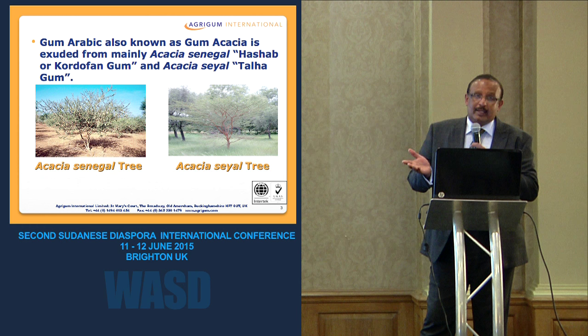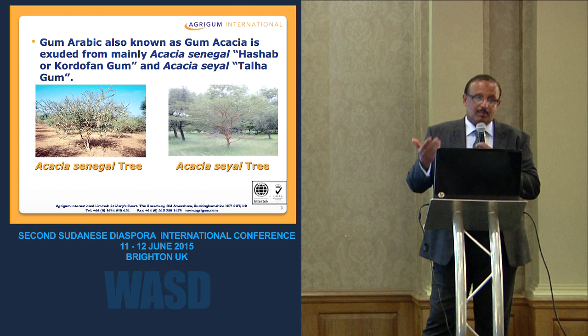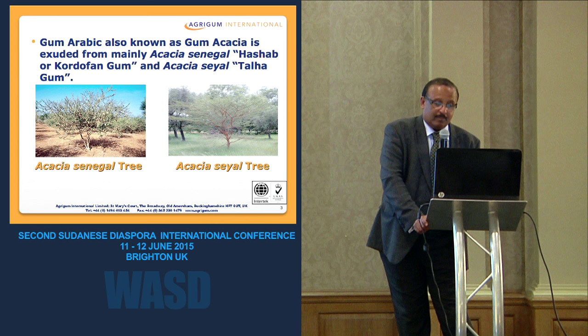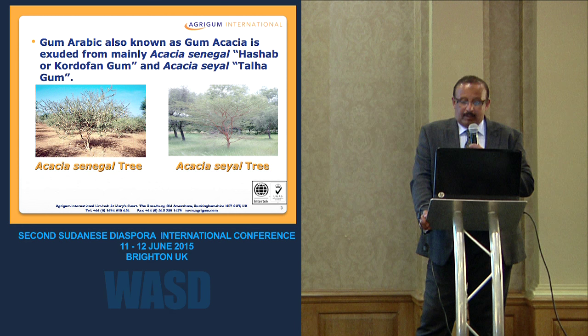Gum Arabic and gum Acacia are the same product — some people use gum Acacia, some people use the name gum Arabic. It's mainly produced from Acacia Senegal, which is called in Sudan Hashaab or Kurdofan gum, and the other main species is Acacia Sayal, which is called Talha gum.